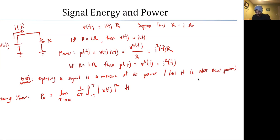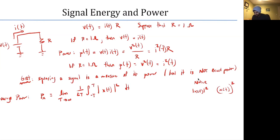Notice that our expression uses magnitude brackets |x(t)|² instead of just x(t)². The reason we use these magnitude brackets is in case the signal x(t) is complex. If x(t) is real, we don't need those vertical lines, because the square of the signal doesn't require magnitude.